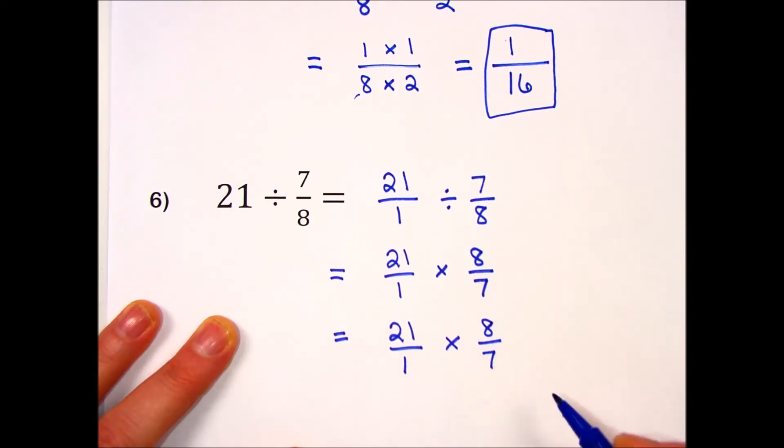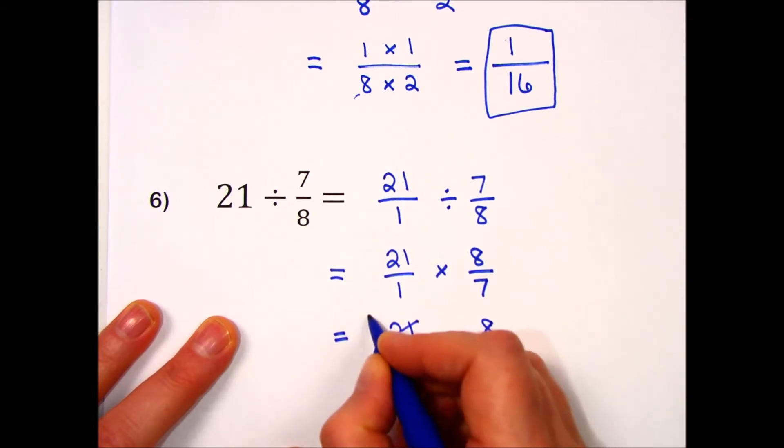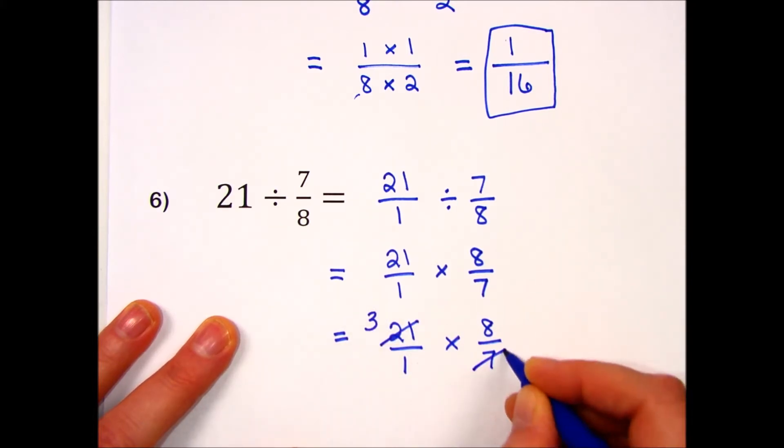That may keep my numbers from getting too big. This diagonal does not have any factors that can cancel, but on this diagonal both 21 and 7 are divisible by 7. 21 divided by 7 is 3; 7 divided by 7 is 1.